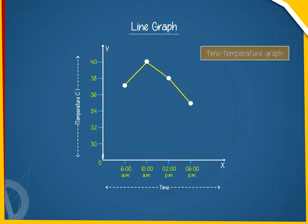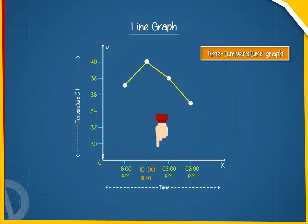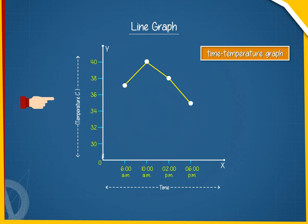This line graph is a time-temperature graph. The horizontal line and the vertical line are used to represent two variables, namely time and temperature in this case. The horizontal line shows the timing at which the temperatures were recorded, and the vertical line indicates the temperatures in degrees Celsius at various times.